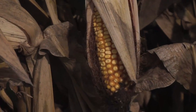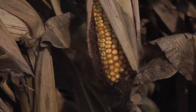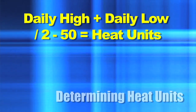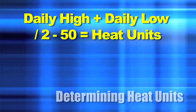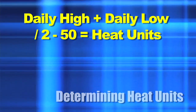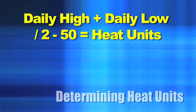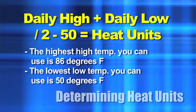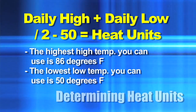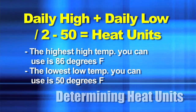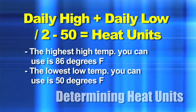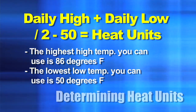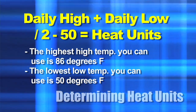The way that corn really matures is based on heat units. Every corn variety has a certain number of heat units required in order to reach maturity. The way we calculate heat units is: we take the high temperature for the day plus the low temperature for the day, divided by 2, and subtract 50. That tells us growing degree days, or what we call heat units. The highest you can use for a high is 86, because corn plants start to shut down beyond 86 degrees. And 50 is the minimum low, because below 50 your plant is also starting to shut down.